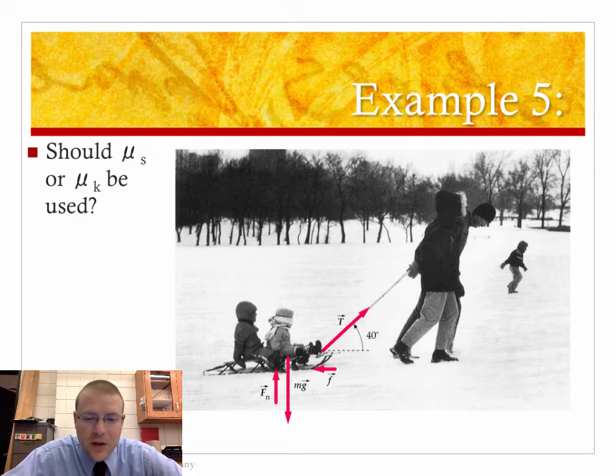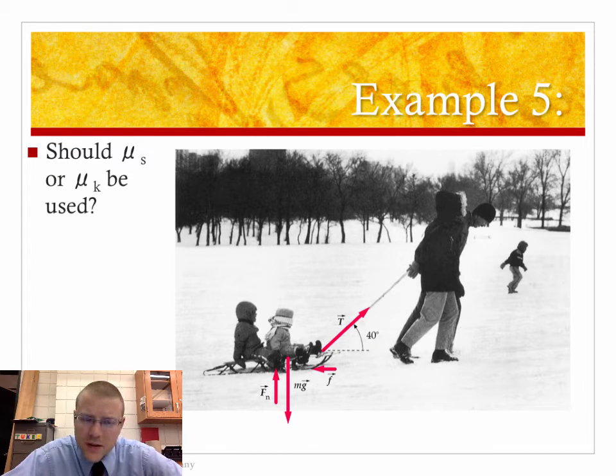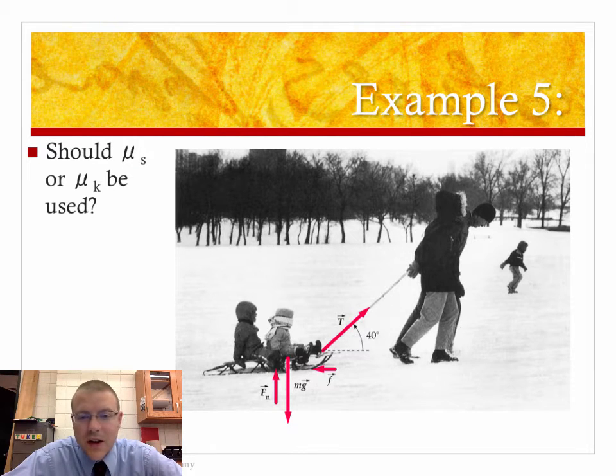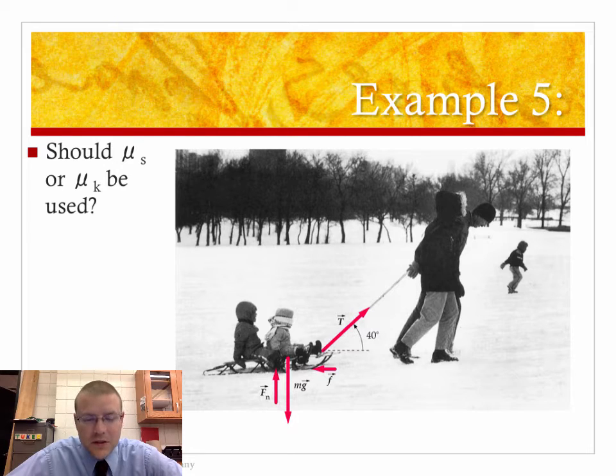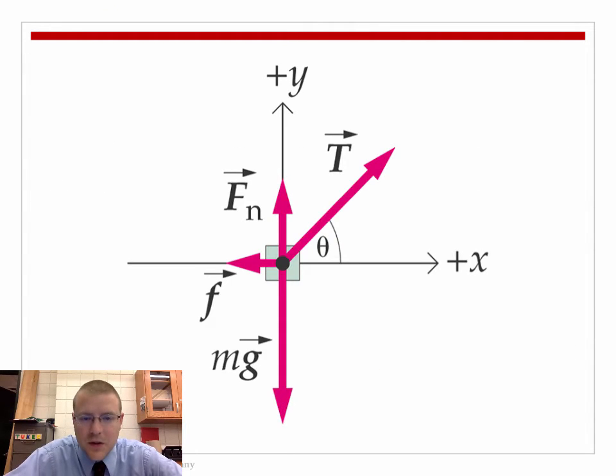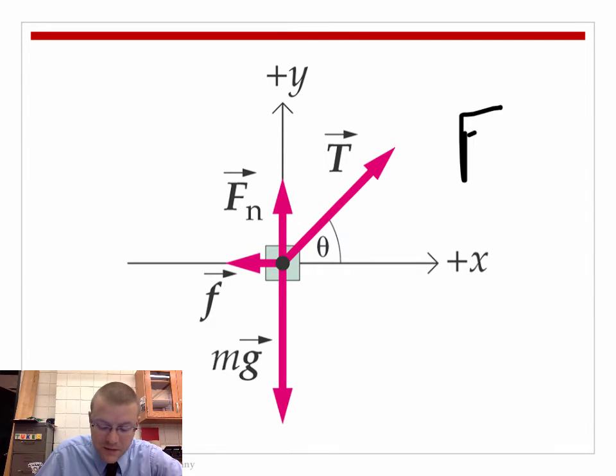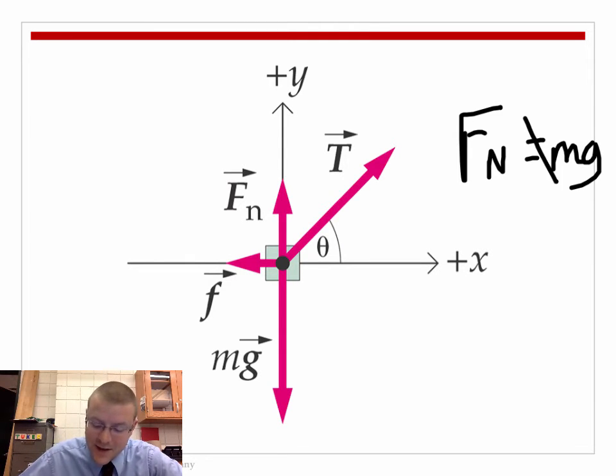Example five here says, we're pulling at an angle, these kids on a sled. Should we use mu s or mu k? Should we use the static coefficient or the kinetic coefficient? Well, depends on the scenario and how these problems work themselves out. So let's try this example. Here's the free body diagram. Tension up and to the right, friction back, gravity down, and the normal force up. The one thing that people like to do is say that normal force must equal the force of gravity. And in this case, that is not true. You have to look at all your forces, look at which directions they're pointing in, and calculate your forces accordingly.